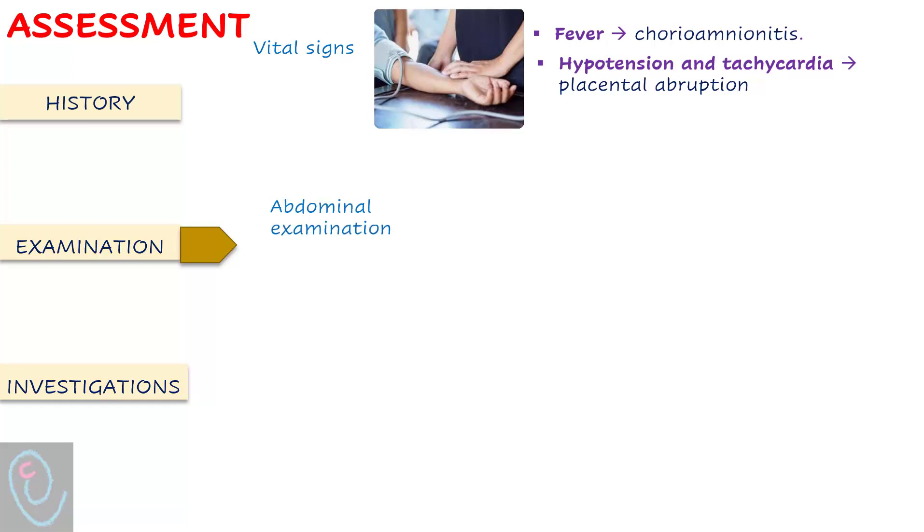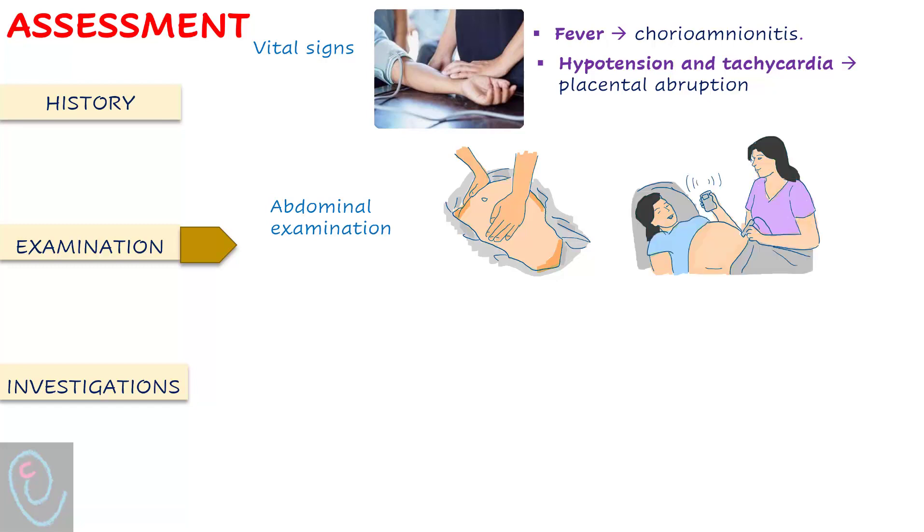Abdominal examination identifies fundal height and fetal lie, may detect abdominal tenderness, and auscultates fetal heart rate. Abdominal tenderness may indicate chorioamnionitis or placental abruption. Abnormal fetal heart rate may indicate cord prolapse.